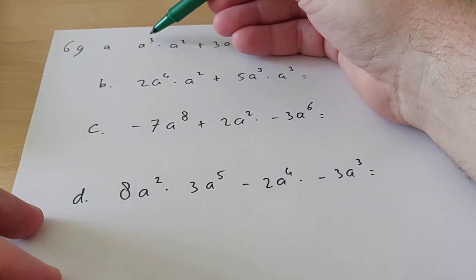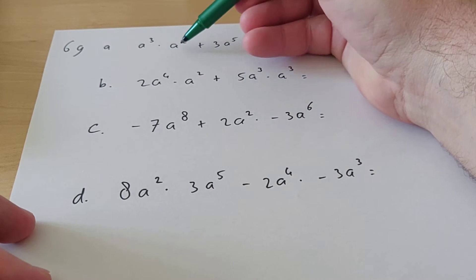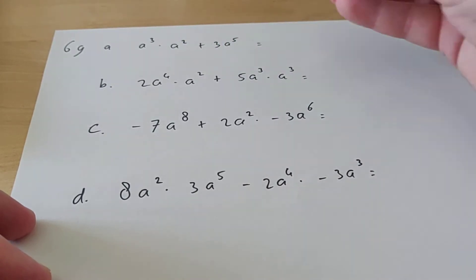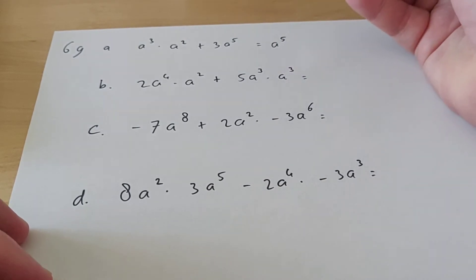So for the first one, first we have to do a^3 times a^2. Now what you learned is that you have to add these powers, so you get a^5.